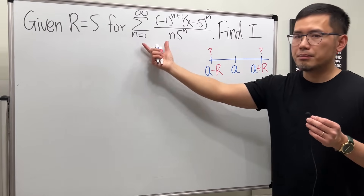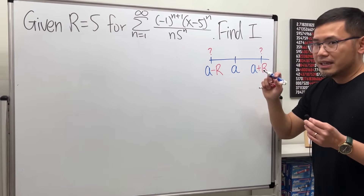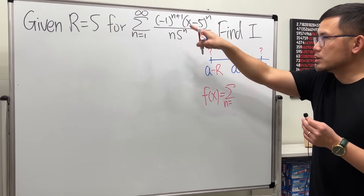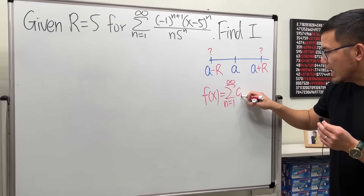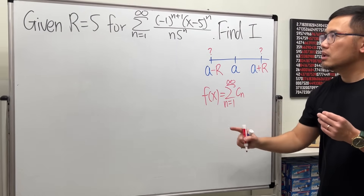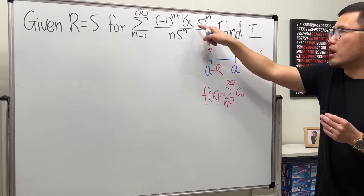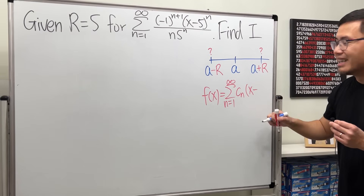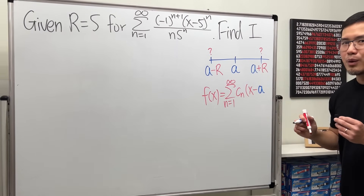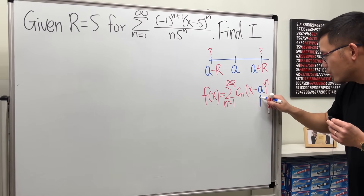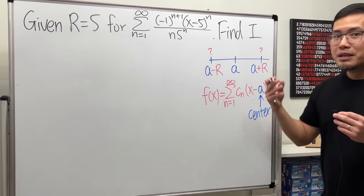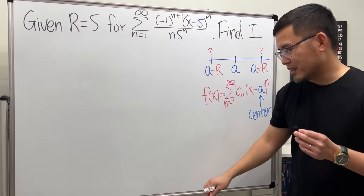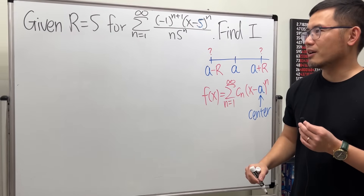How about the center 'a' from the power series? Here's the idea: if we have a function written in its power series form — the series from n=1 to infinity — we have the coefficient sequence c_n, and then the x part written as (x minus a) to the nth power. That number 'a' is the center of the power series. So here the center is 5, and the radius of convergence is also 5, which makes this question a little confusing.